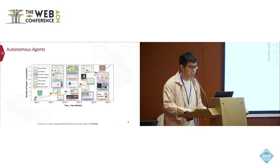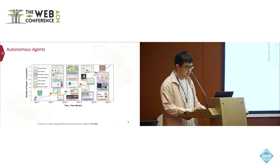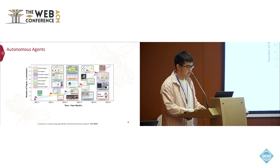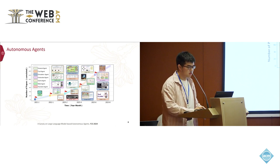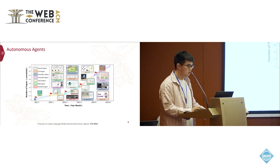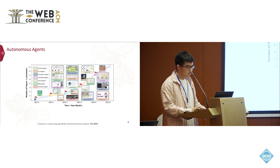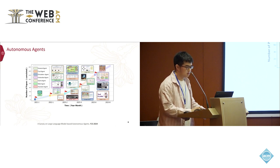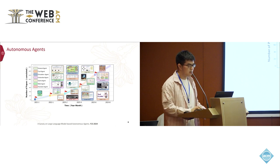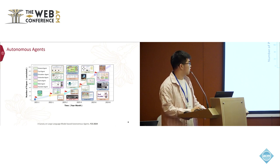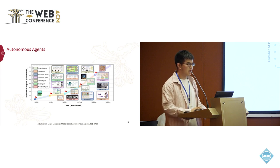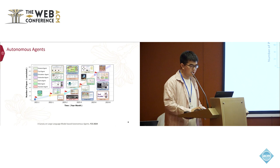More recently, by training on larger corpora and acquiring richer world knowledge, large language models have demonstrated capabilities approaching human-level intelligence. This advancement has sparked significant interest in deploying these models as autonomous agents. LLM-powered agents hold tremendous potential for recommendation systems. For example, we could simulate personalized user agents before launching a service, providing feedback to make necessary adjustments. Furthermore, we could simulate users' social interactions by enabling communications between these agents, modeling social relationships and enhancing recommendation effectiveness.